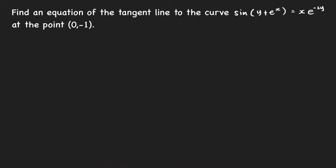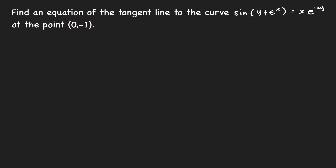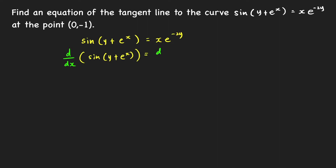Next problem: find an equation of the tangent line to the curve at the point (0, negative 1). We already know the x and y coordinates of the tangent point, so we just need to find the slope. To find the slope we compute the derivative. The curve is sine of y plus e to the x equals x times e raised to negative 2y. To find dy/dx we apply implicit differentiation, taking the derivative of both sides with respect to x.